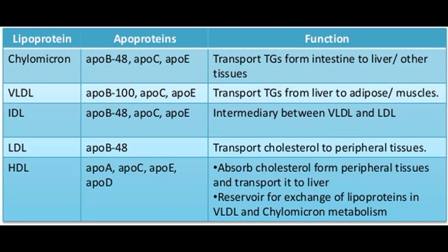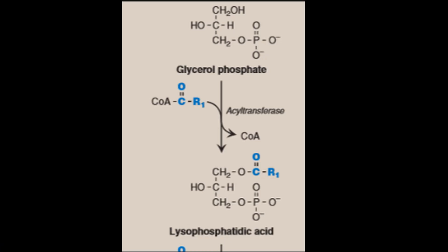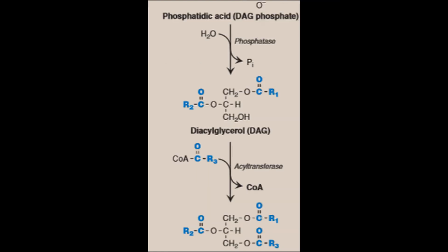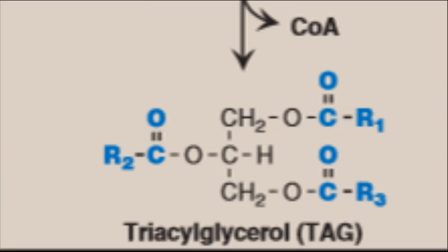You can also see the apoproteins that each of these lipoproteins contain. TAG is synthesized from glycerol phosphate into lysophosphatidic acid by the enzyme acyl transferase, which goes into phosphatidic acid — diacylglycerol phosphate — again by acyl transferase, and then diacylglycerol is produced by a phosphatase enzyme, which finally gives us TAG. Triacylglycerols consist of one, two, or three molecules of fatty acid esterified to a molecule of glycerol.